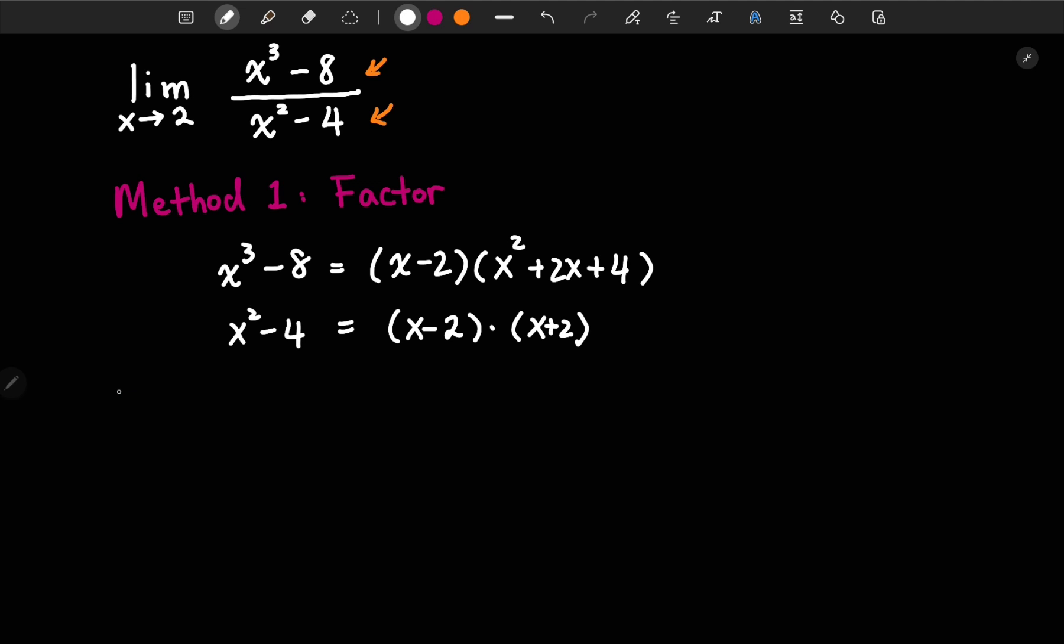And now we can rewrite our limit function. And as x goes to 2, on top we have x minus 2 times x squared plus 2x plus 4. And on the bottom, we have x minus 2 times x plus 2. So, we can cancel out the common terms. Then we get x squared plus 2x plus 4 over x plus 2.